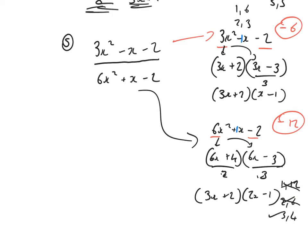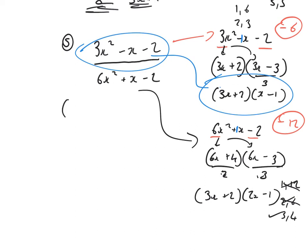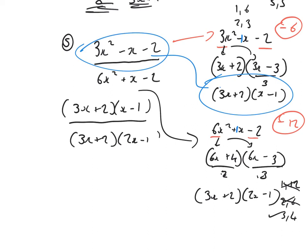Bringing it all back in: the top factorised to 3x plus 2 bracket x minus 1, and the bottom factorised to 3x plus 2 bracket 2x minus 1. The (3x plus 2) terms cancel, giving a final answer of x minus 1 over 2x minus 1.